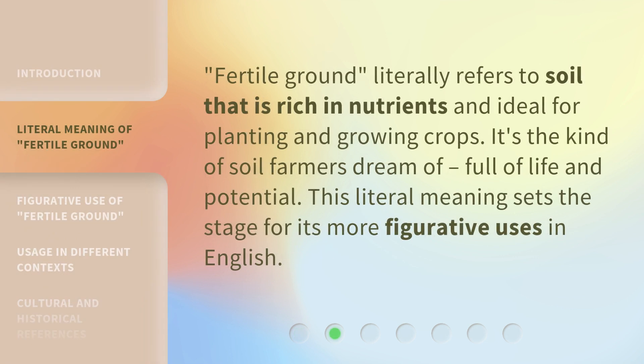Fertile Ground literally refers to soil that is rich in nutrients and ideal for planting and growing crops. It's the kind of soil farmers dream of, full of life and potential. This literal meaning sets the stage for its more figurative uses in English.